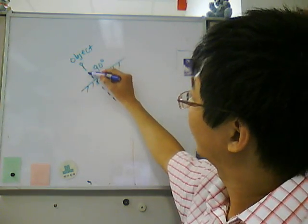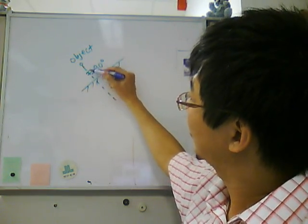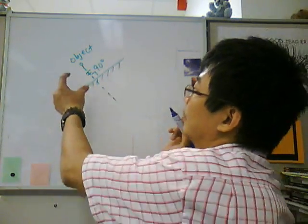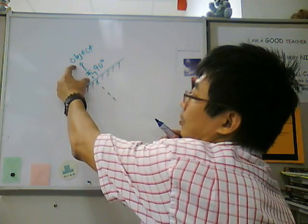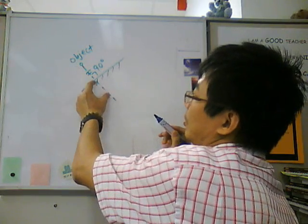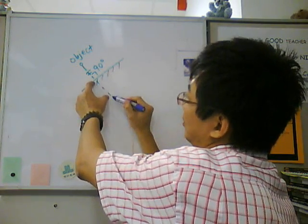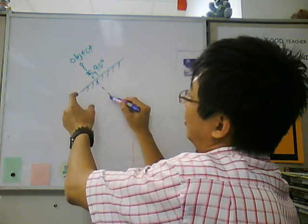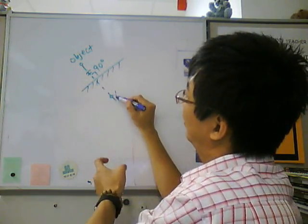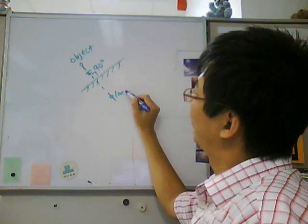Now you have to get equal distance. Using your ruler, measure equal distance, and this will be the image.